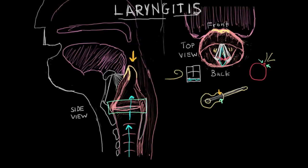This starts to make a lot of sense when you think about inflammation. When there's inflammation of the larynx, the vocal cords are also involved. Inflammation means swelling, and swelling adds mass to the vocal cords, prevents them from vibrating as well, and makes them really floppy. So people who have laryngitis have a very hoarse and raspy voice. That's really the principle behind the larynx and laryngitis.